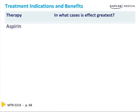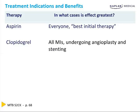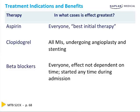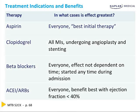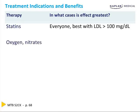Therapy recap: aspirin is the best initial therapy for everybody. Combine it with clopidogrel, prasugrel, or ticagrelor for all MIs, angioplasty, and stenting. Beta blockers for everybody — they are not acutely life-saving, so it doesn't matter if you start them now or in an hour and a half, just give them at some point. ACE inhibitors and ARBs should be given to every acute MI, with the greatest mortality benefit in those with low ejection fraction. Statins are given for all acute MIs, with the greatest benefit for those with LDL above 100.